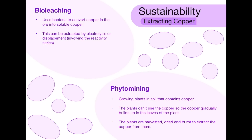Another method is phytomining. Phytomining involves growing plants in soil that contains traces of copper. The plants can't use or get rid of the copper, so it gradually builds up in the leaves as the plant grows. Once fully grown, the plants are harvested, dried, and burnt to extract the copper from them. These are two fairly environmentally friendly ways of mining metal.